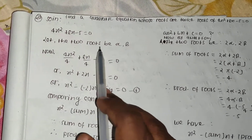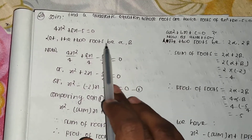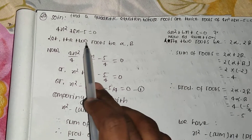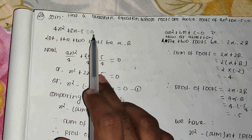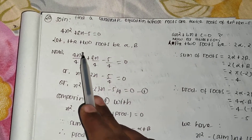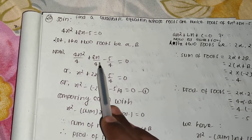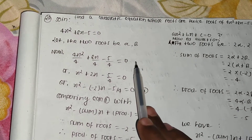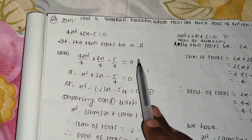Let the two roots be alpha and beta. Now we should divide by 4 on both sides, so the equation becomes 4x²/4 + 8x/4 - 5/4 = 0, and 0/4 = 0.